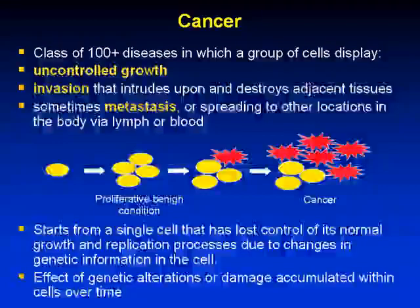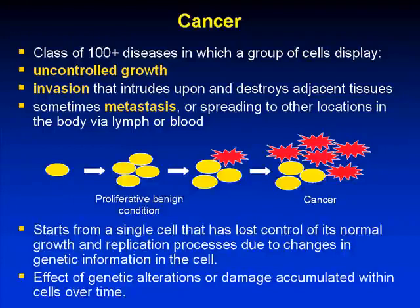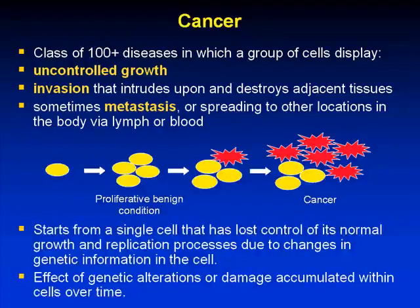In all cases, it starts from modifications in single cells, which can then go on to contribute to loss of normal growth, loss of control of replication processes, and over time there's an accumulation of numerous other genetic alterations that can contribute to tumorigenesis.